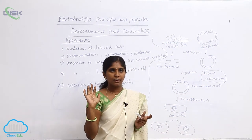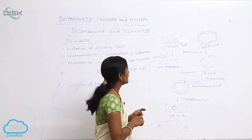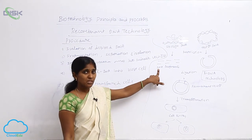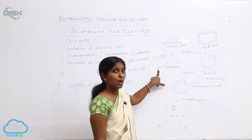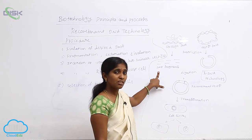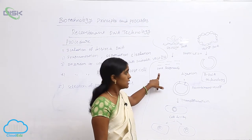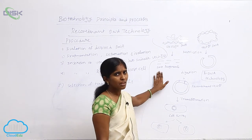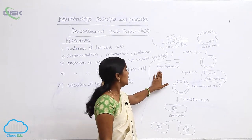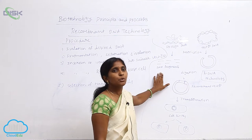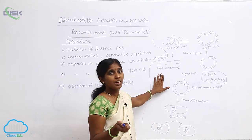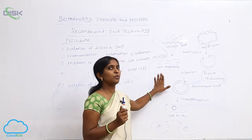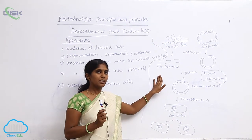After the cut, the vector DNA is formed as a linear DNA. From the foreign DNA, thousands of DNA fragments are formed. To screen the desired DNA fragment, we go for separation using electrophoresis.